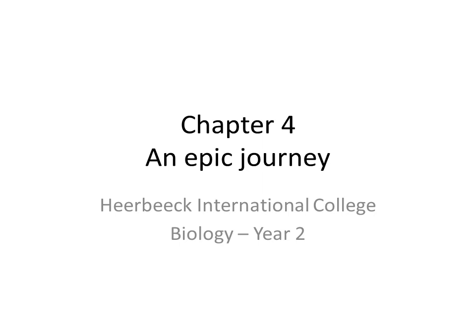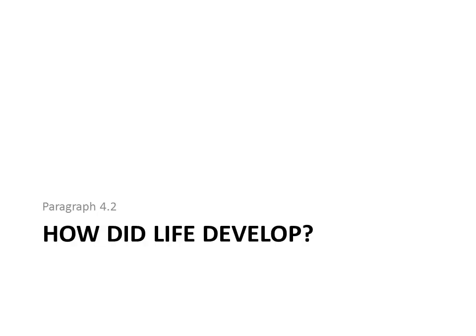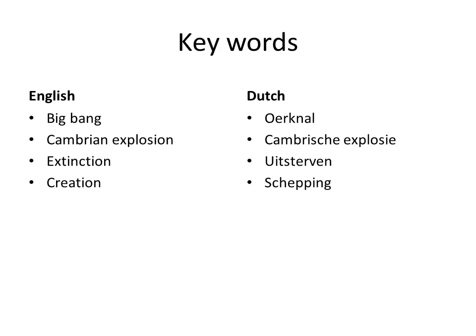Hi boys and girls, welcome to the second PowerPoint presentation of this chapter — chapter 4. Paragraph 4.2 is titled 'How did life develop?' These are the keywords you need to study. On the left the English keywords: Big Bang, Cambrian explosion, extinction, and creation. On the right the Dutch translations.